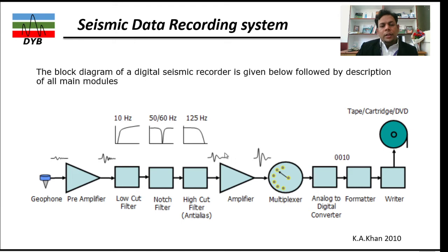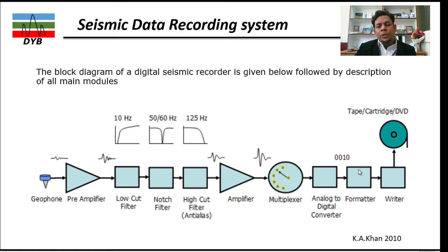If the amplification is still not enough, we have another amplifier which further amplifies the amplitude of the signals. Then the signal comes to the multiplexer: if you have a number of geophones, it converts the geophone energy from the multiplexer at a given sampling rate. Then it comes to the analog-to-digital converter. After that it goes to the formatter, where you can specify the format you need — such as SEGY or SGY — and then it is written onto a magnetic tape cartridge or DVD.